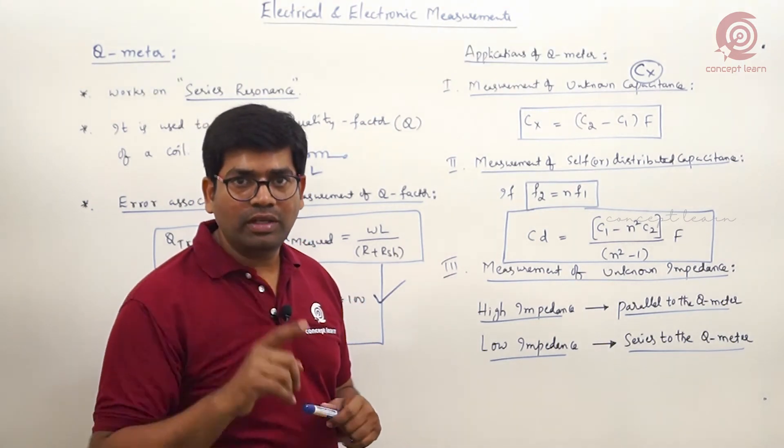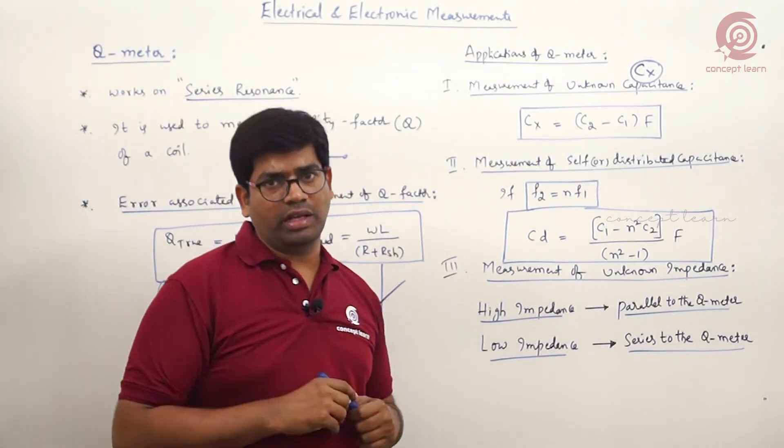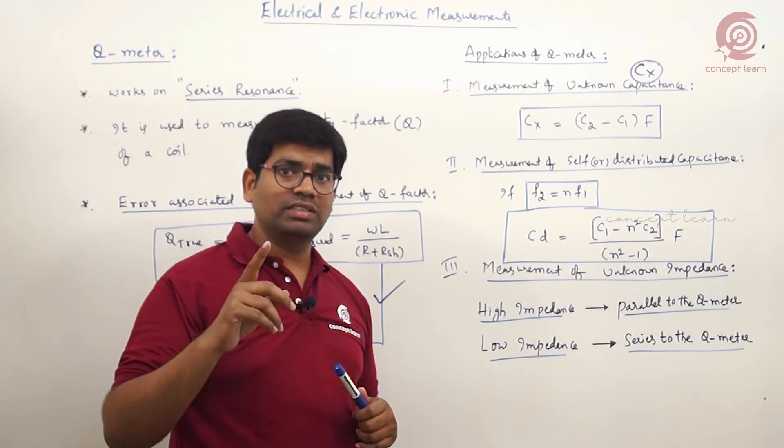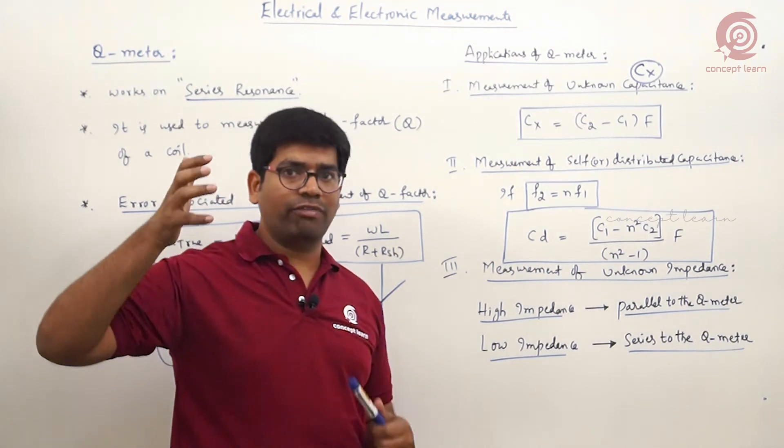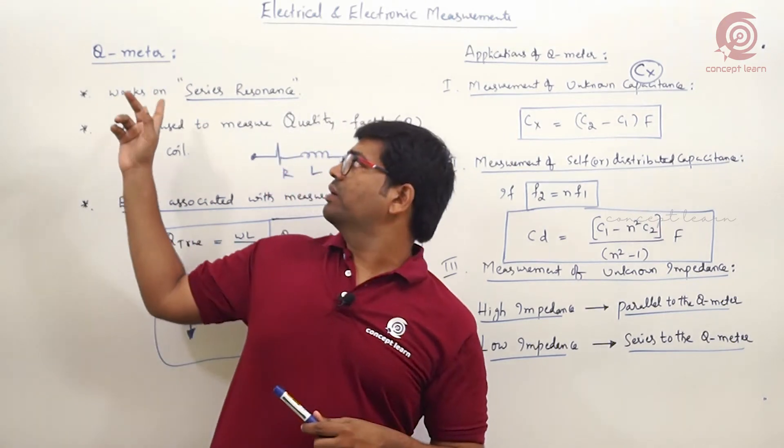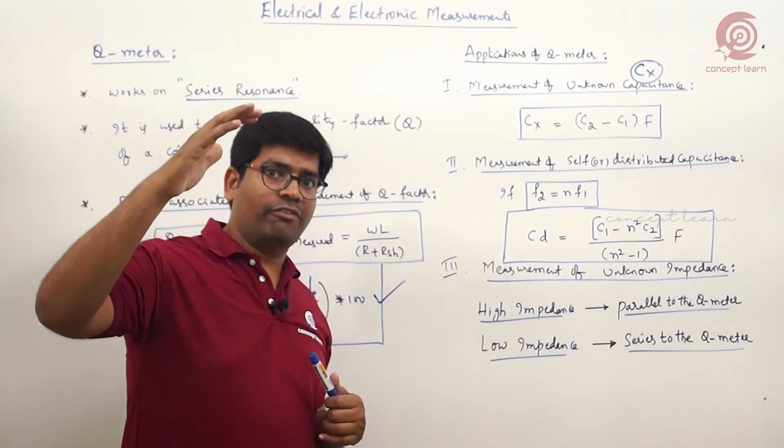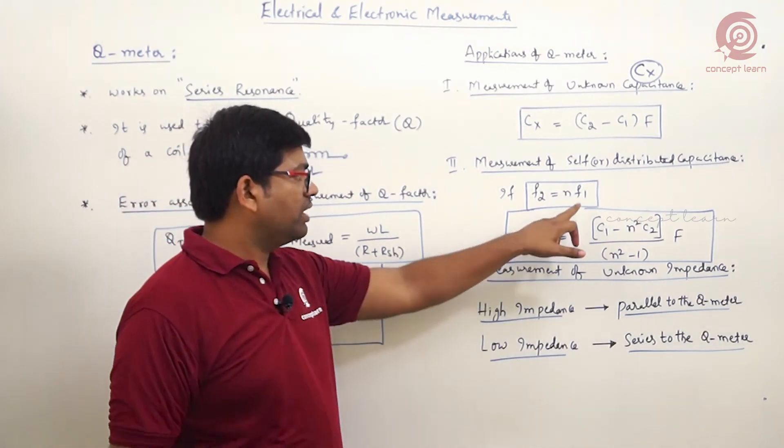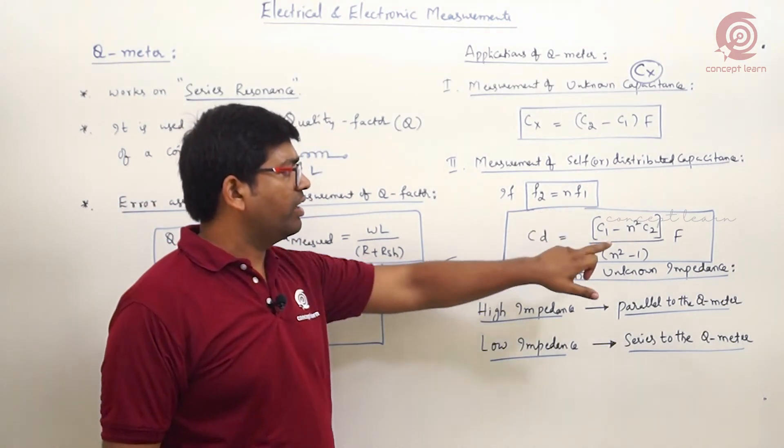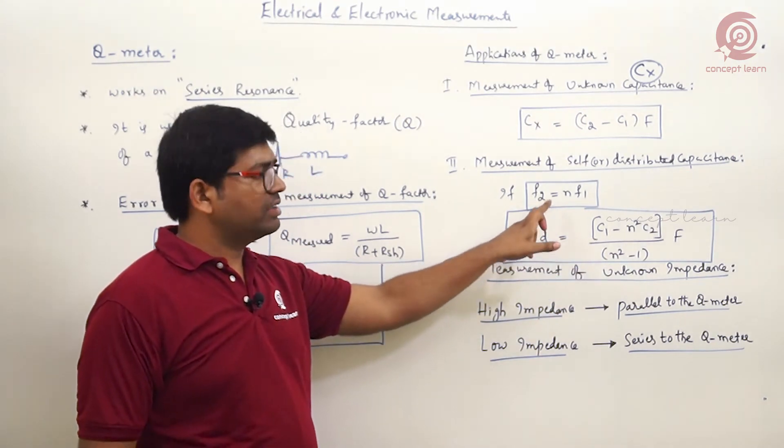Now how to find the self or distributed capacitance? As I mentioned before, this is possible only at high frequencies. Now we resonate the circuit because it is working based on resonance. We resonate the circuit at higher frequencies.